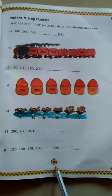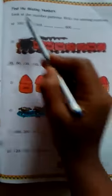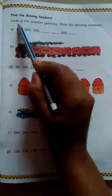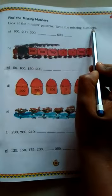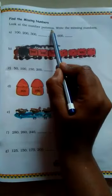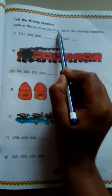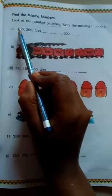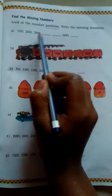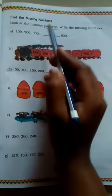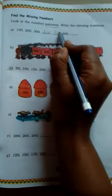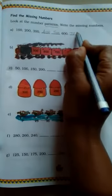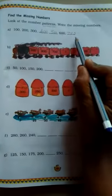Now look at page number 85. Find the missing number. Look at the number pattern. Write the missing numbers. You had learned number pattern in second standard. Look at first example. 100, 200, 300. The next pattern will come 400, then 500, 600 and 700. Like this.